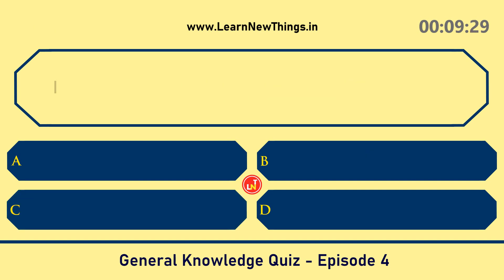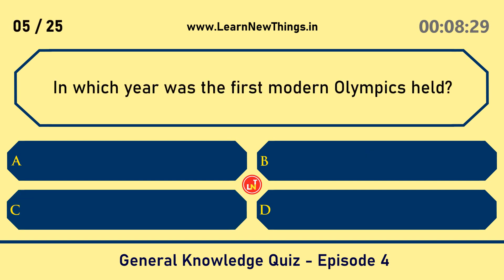In which year was the first modern Olympics held? 1896.